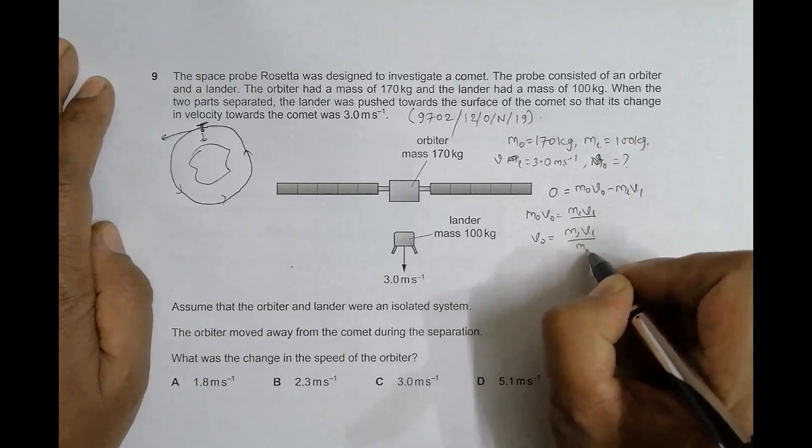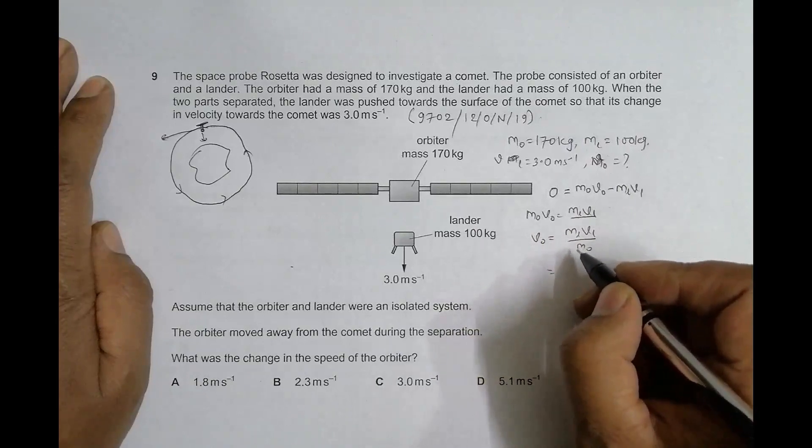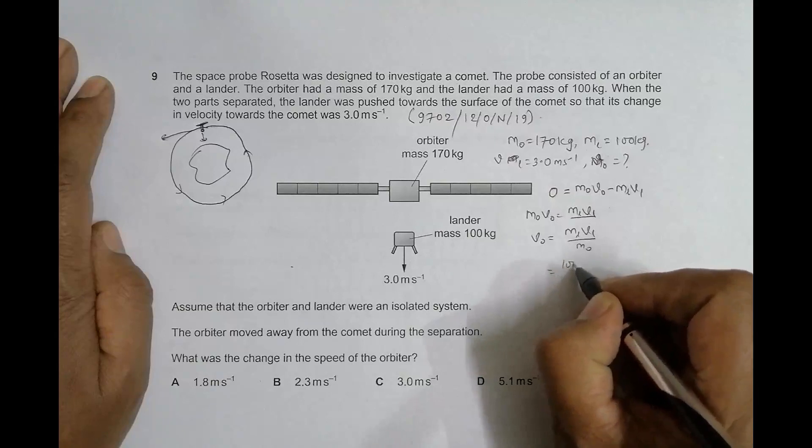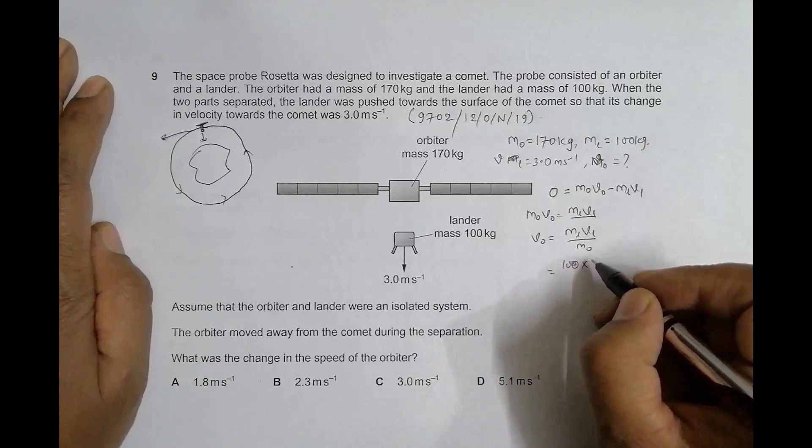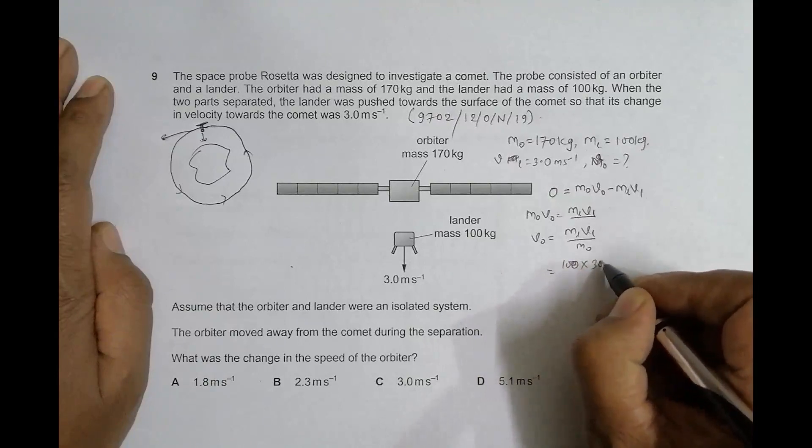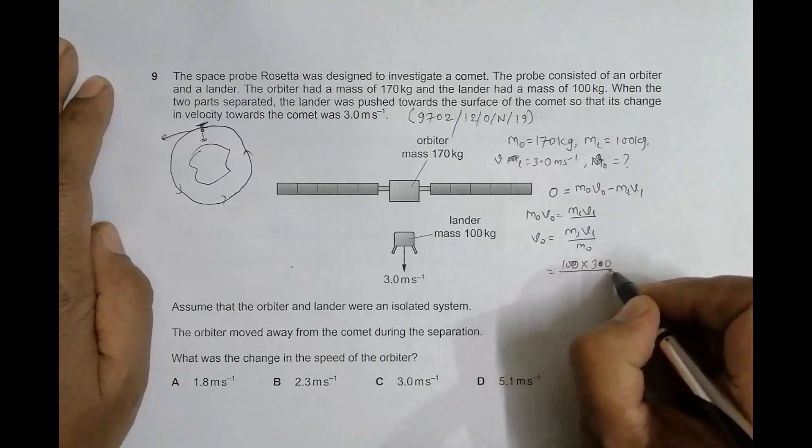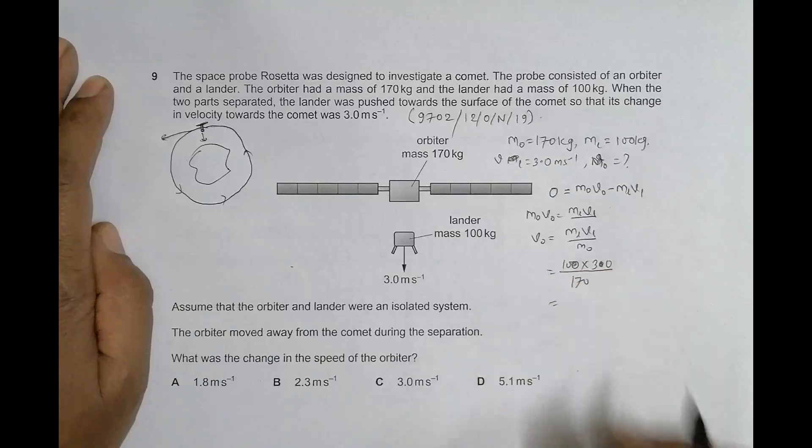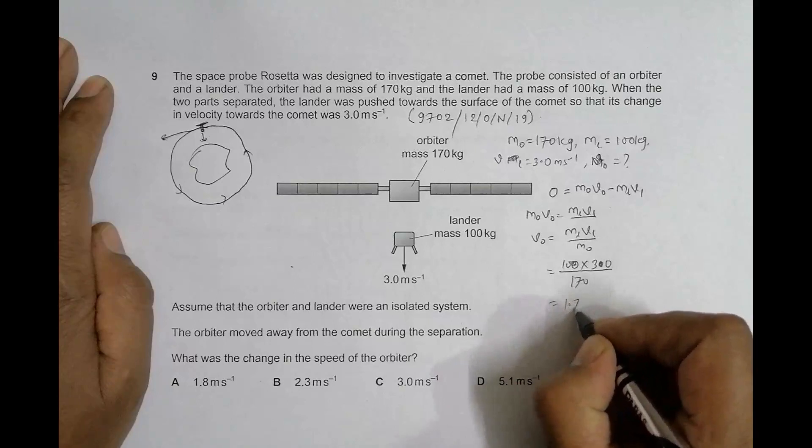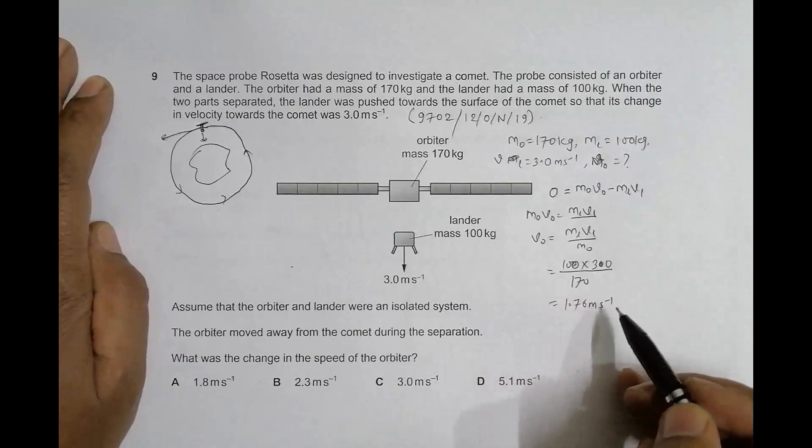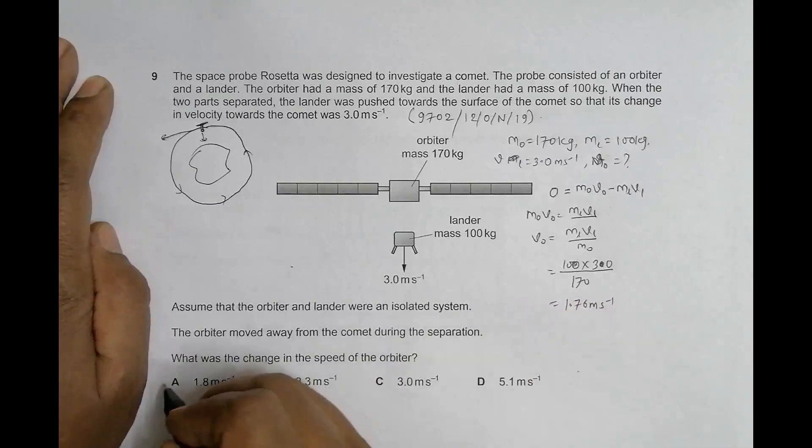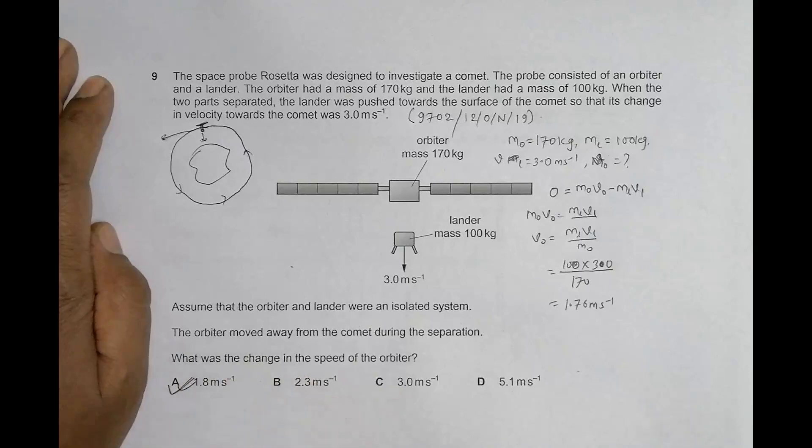V orbiter equals M lander which is 100 into V lander which is 3.0 divided by 170. When you do the calculations, 100 into 3 divided by 170 equals 1.76 meter per second. So the answer choice which is nearest to this is 1.8, so choice A should be the correct choice.